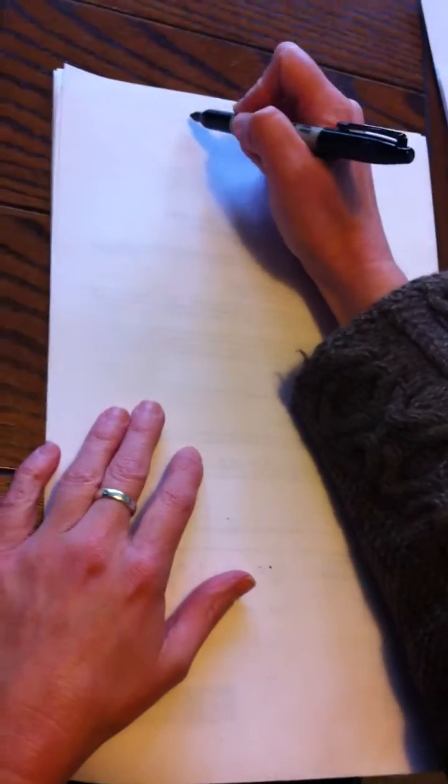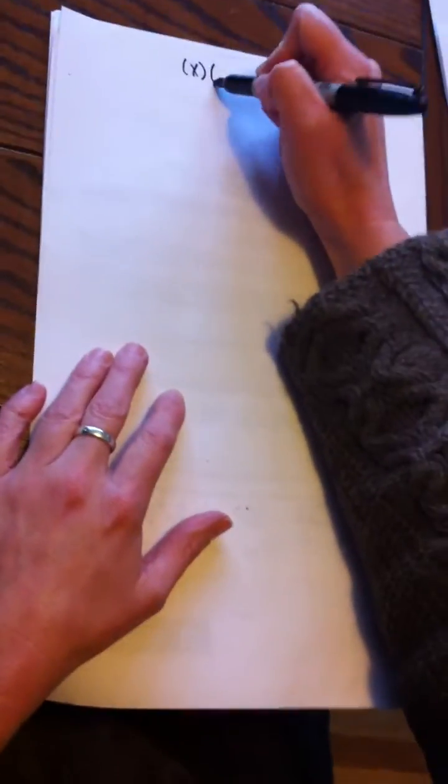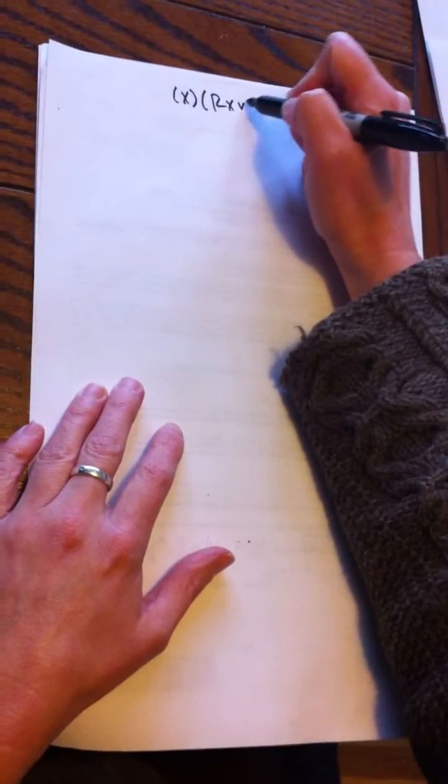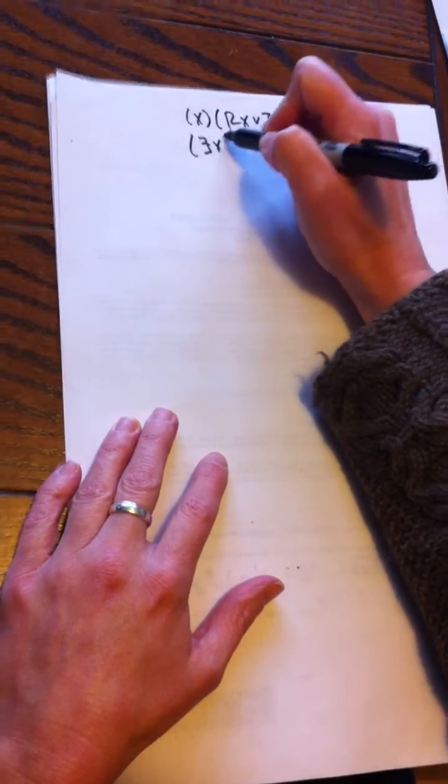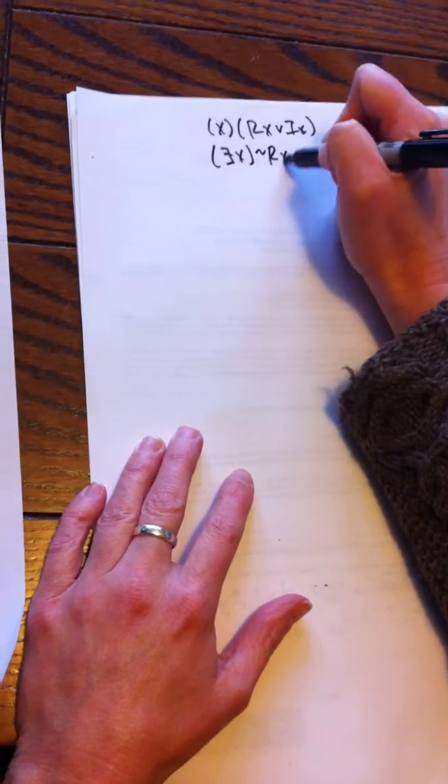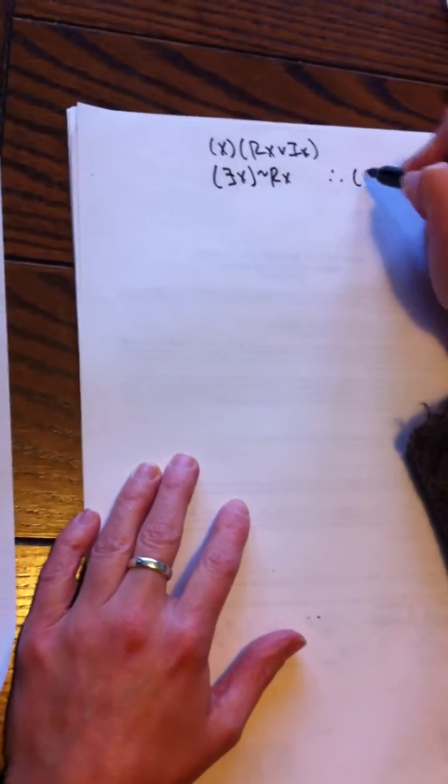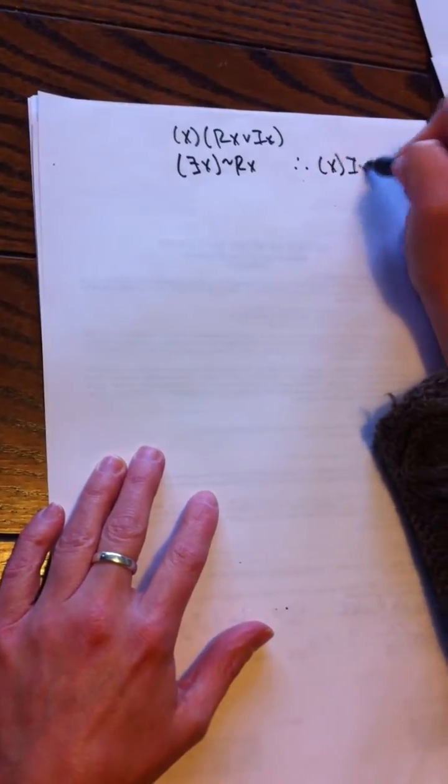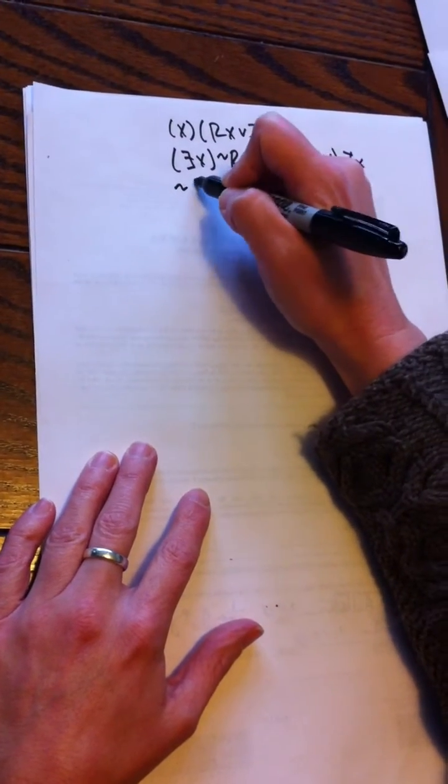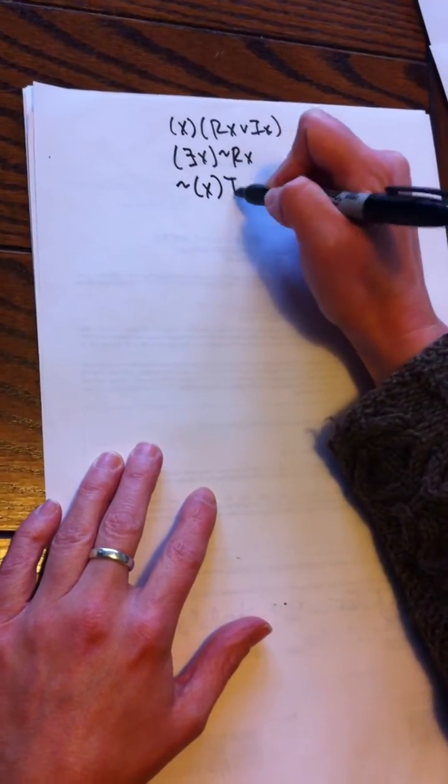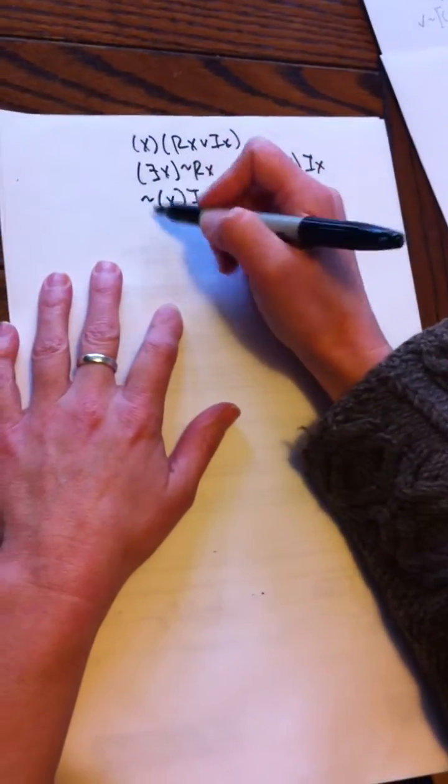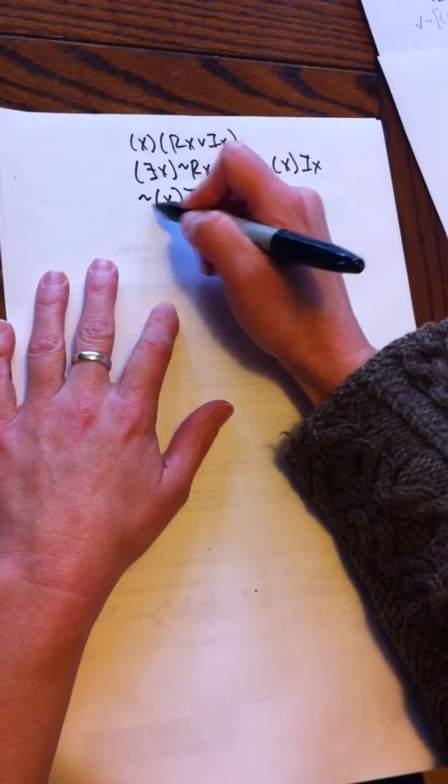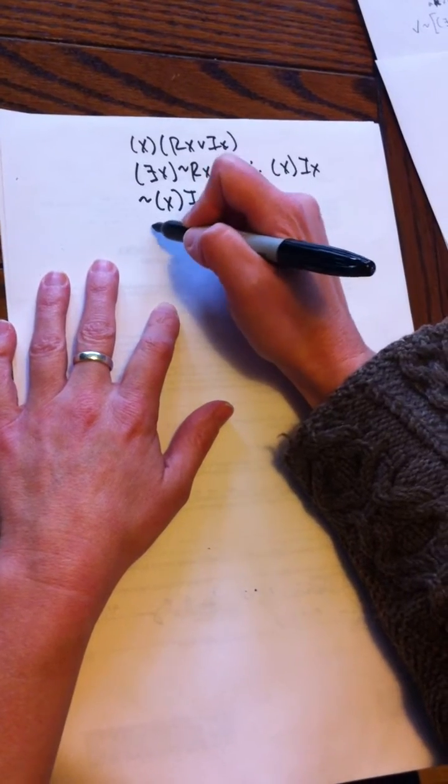So that first premise again: everything is real or imaginary, there exists something that is not real, therefore everything is imaginary. Take the negation of the conclusion. I'm gonna do my negation rule first, so